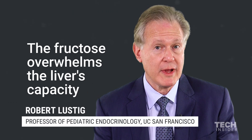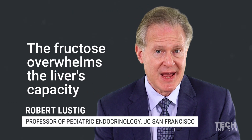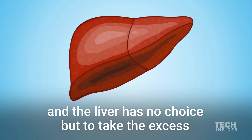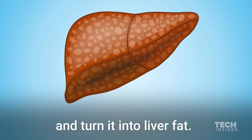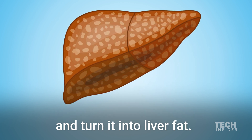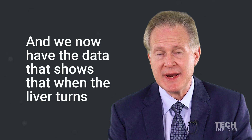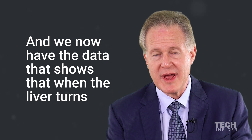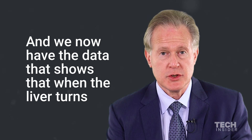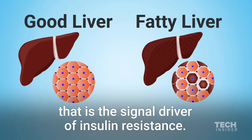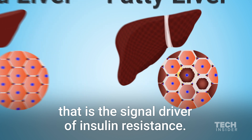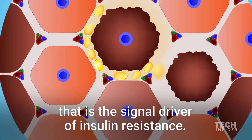The fructose overwhelms the liver's capacity to metabolize it, and the liver has no choice but to take the excess and turn it into liver fat. And we now have the data that shows that when the liver turns what it's being exposed to into liver fat, that is the signal driver of insulin resistance.